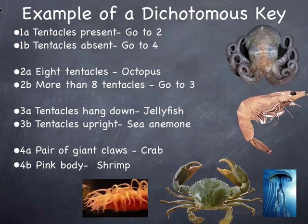So this is a tool that can help us identify unknown organisms. We'll get a little more complex than this. I have five sea creatures — I want you to follow through this key, figure out which step applies, and identify each one. Next to each one, write which choices you made. For each one, do you choose 1A or 1B, then go from there. I'm going to ask you in a couple minutes to tell me what steps you followed.